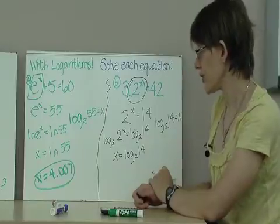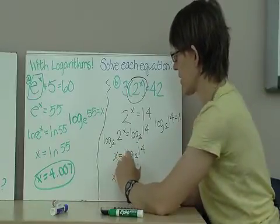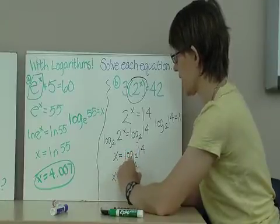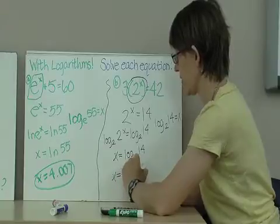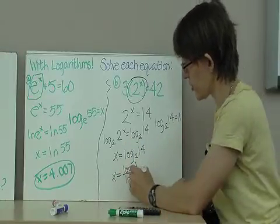I have that x is equal to log to the base 2 of 14. Using change of base here, I can calculate x as log divided by log of 2. So let's go ahead and do that. This is a 2.